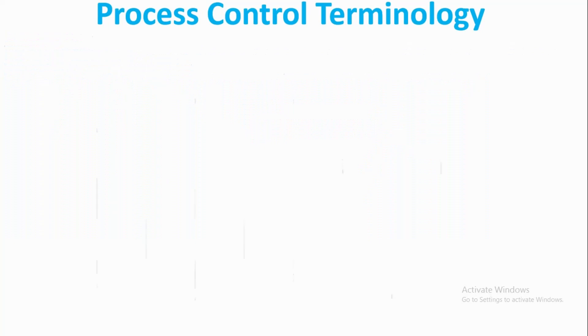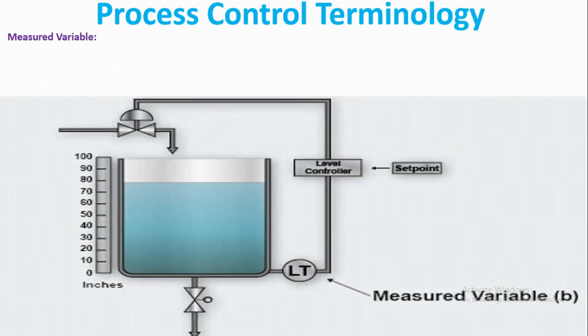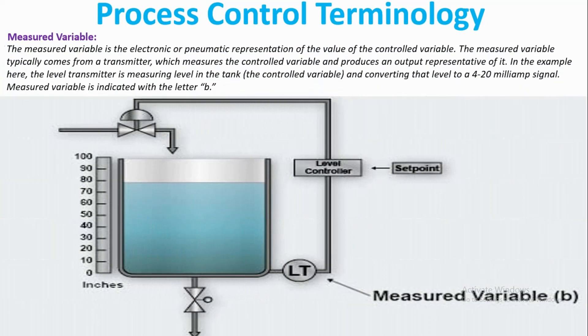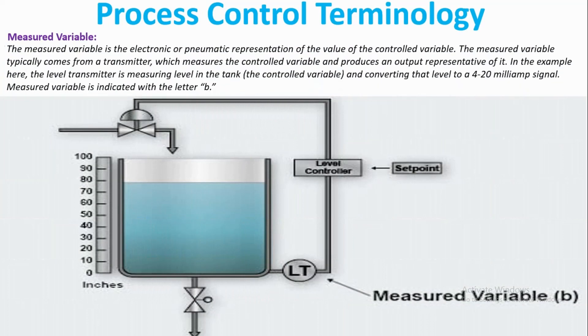Next, we will see measured variable. The measured variable is the electronic or pneumatic representation of the value of the controlled variable. The measured variable typically comes from the transmitter, which measures the controlled variable and produces an output representative of it.